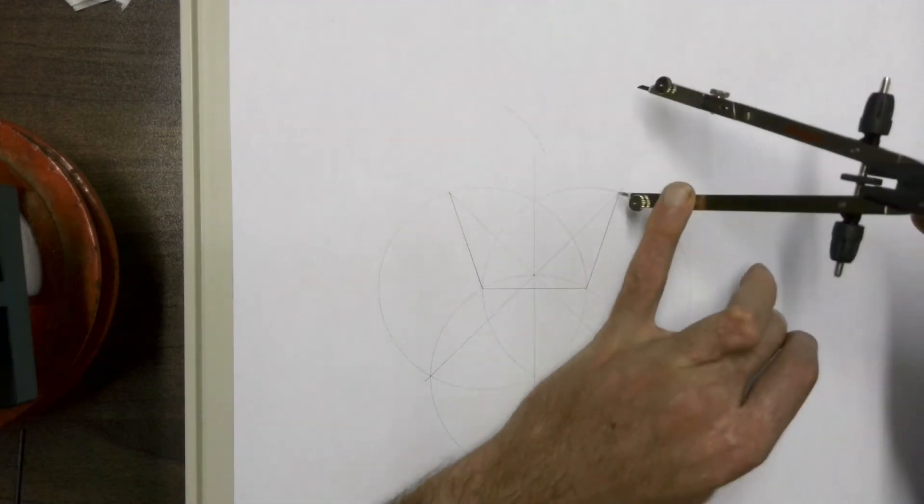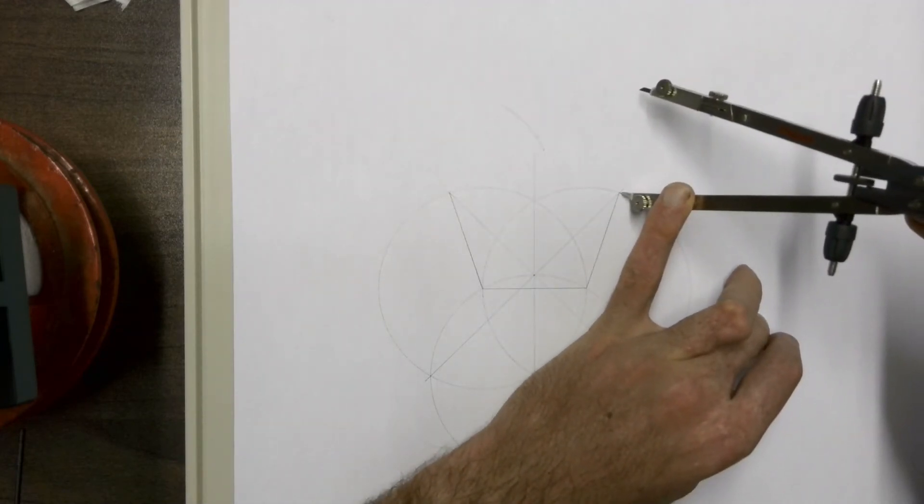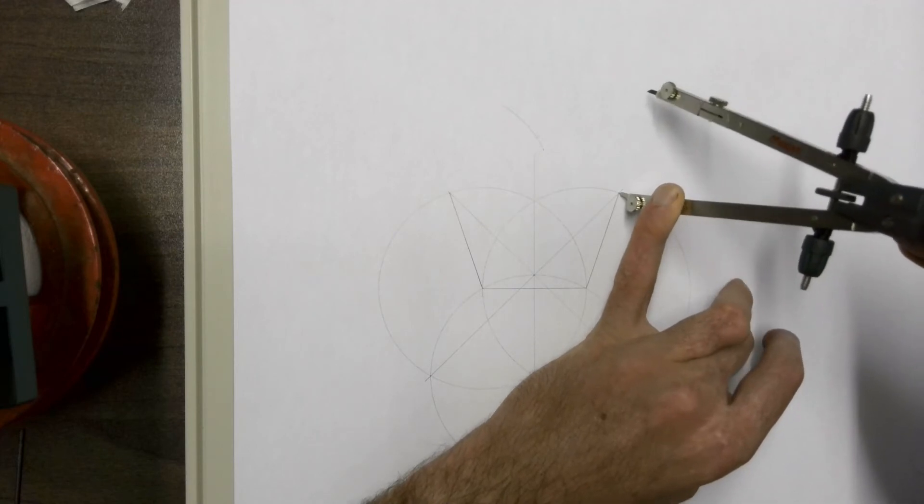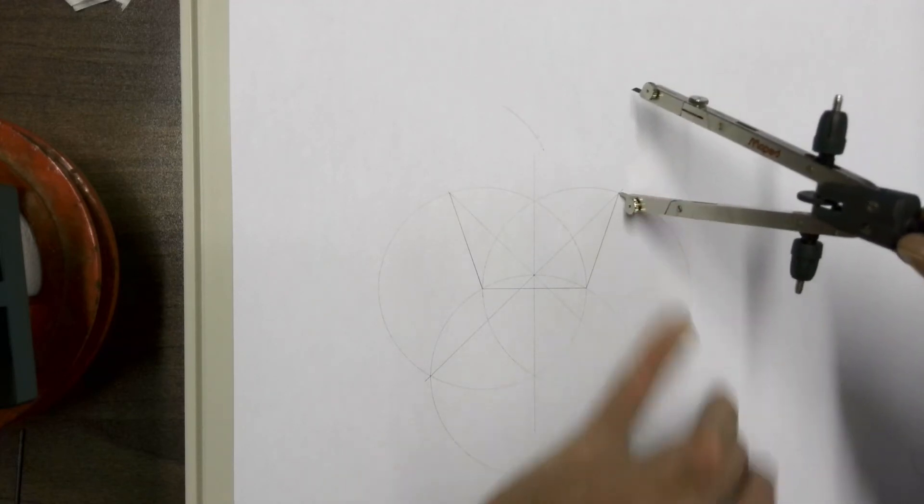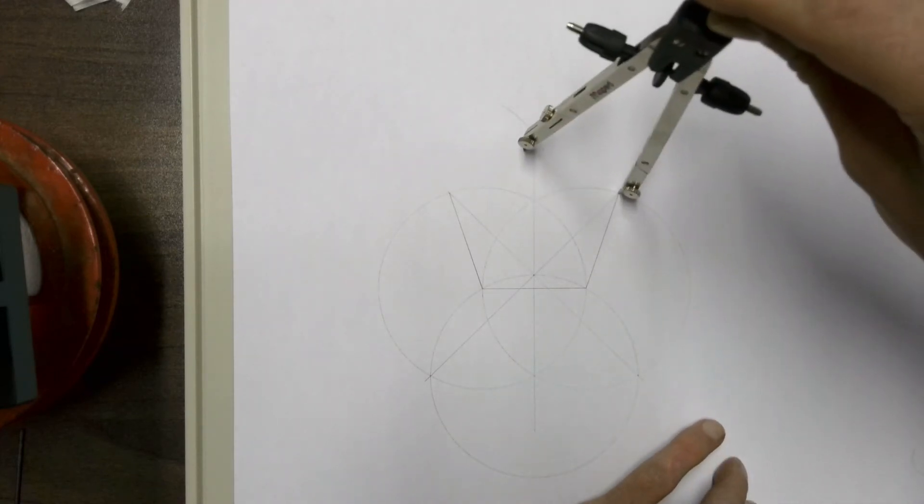Then flip your compass around to the other side, to the same point at the end of that line, and draw another arc.